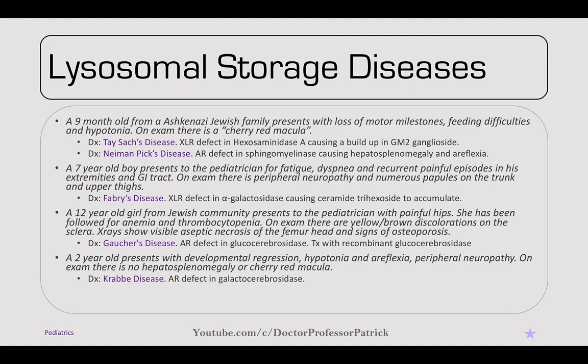A 7-year-old boy presents with fatigue, dyspnea, recurrent painful episodes in extremities and the GI tract. On exam, there's peripheral neuropathy and numerous papules on the trunk and upper thigh. This is Fabry's disease — an X-linked recessive defect in alpha-galactosidase A, causing ceramide trihexoside to accumulate.